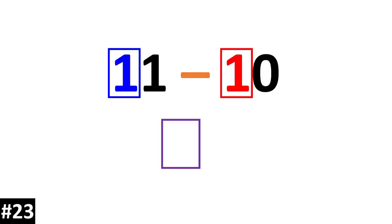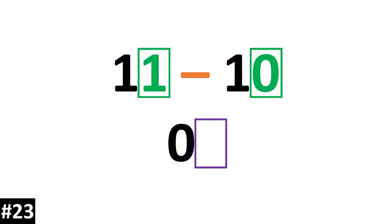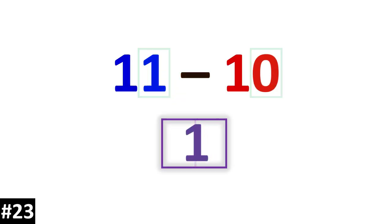11 minus 10. 1 10 minus 1 10 is 0 10s. 1 minus 0 for the ones gives us 1. So our answer is 1.